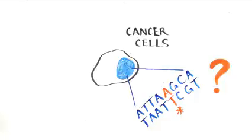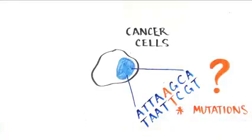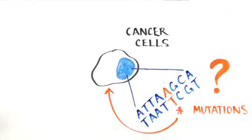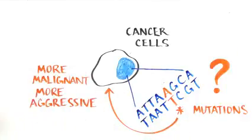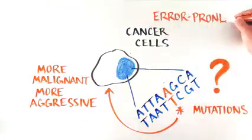Well, when DNA is improperly repaired, errors are introduced in the DNA sequence, and this provides the opportunity for mutations to occur, or changes in the DNA sequence. Mutations in cancer cells can create more malignant or aggressive cancer cells. We call this type of DNA repair error-prone repair.